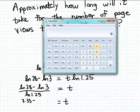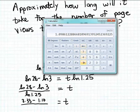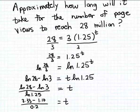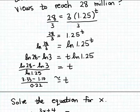Now the natural log of 3 is approximately 1.10. And the natural log of 1.25 is approximately 0.22. So this gives us an approximate value for our unknown T, since we've rounded to a couple of decimal places.